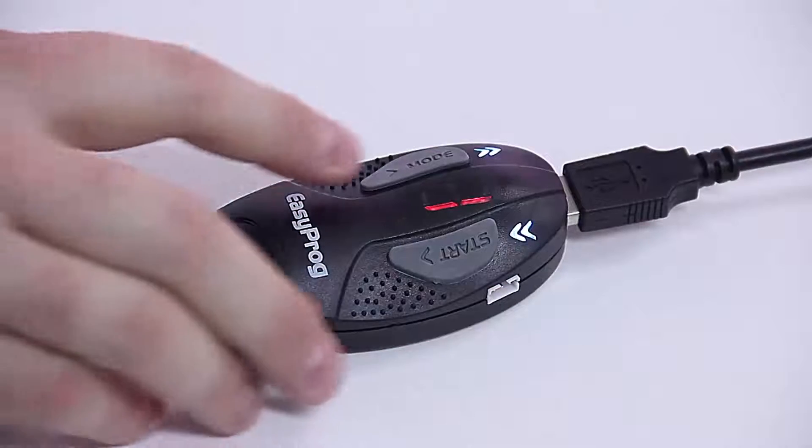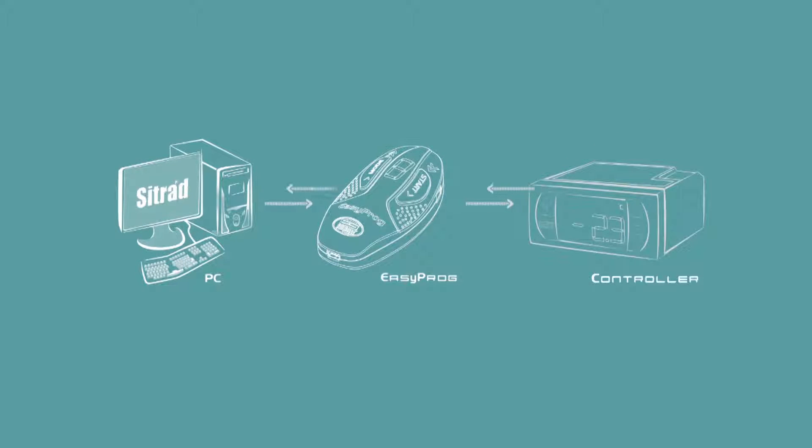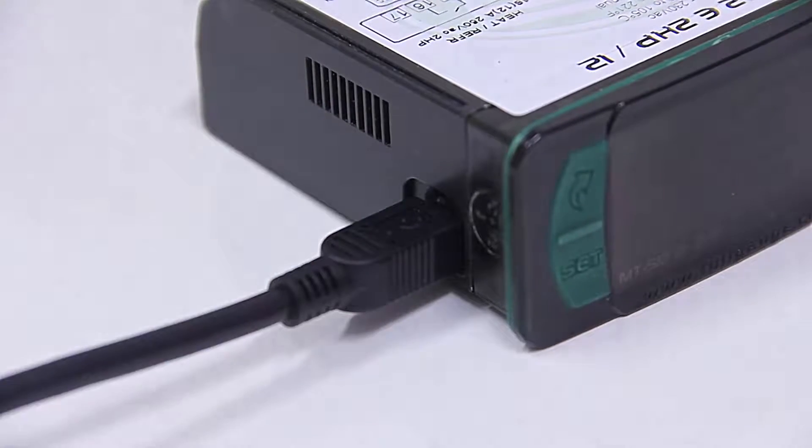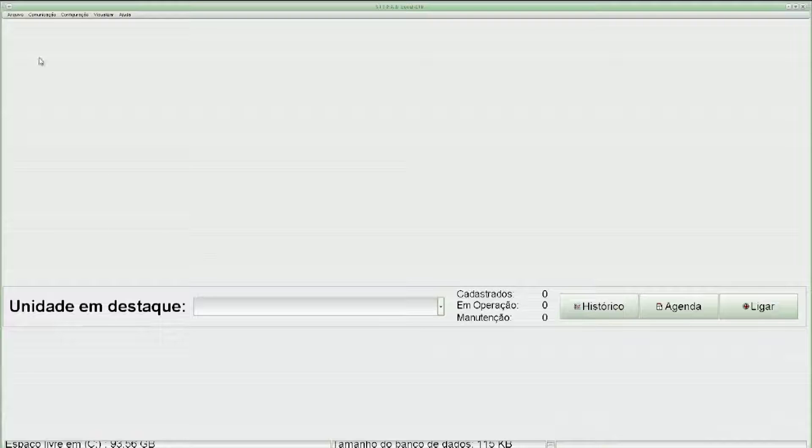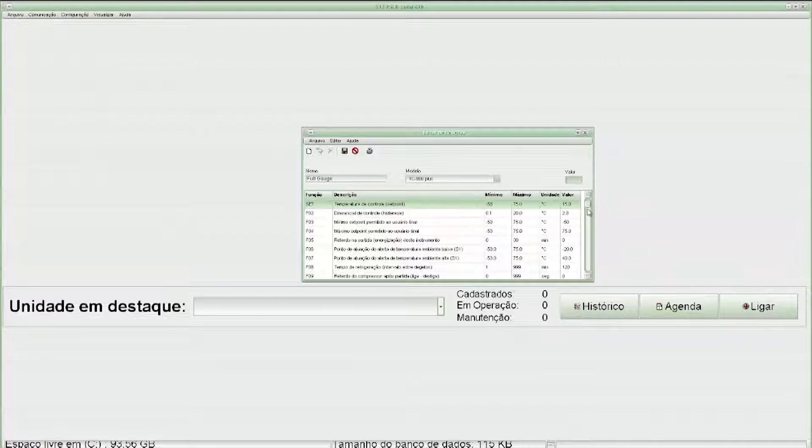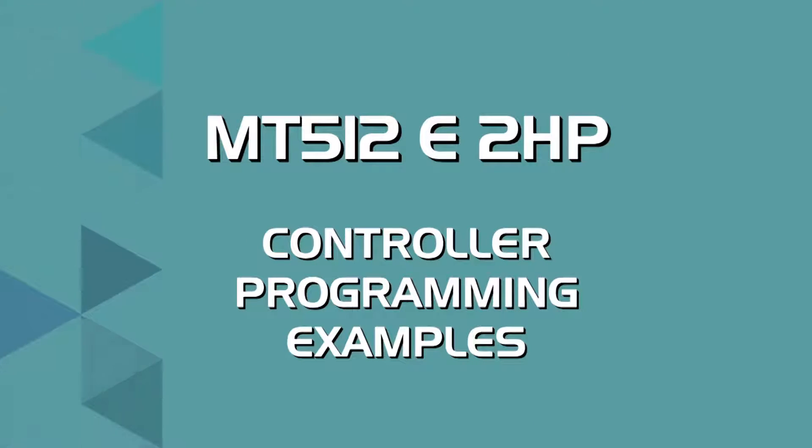To facilitate the programming of the E-Line instruments, Full Gauge Controls provides the EasyProg programmer key. This accessory's main function is to store the parameters of the controllers, load them and download them quickly and easily. Via USB, you can connect the EasyProg to your computer and with the Citrad Recipe Editor, copy, edit and save parameters.